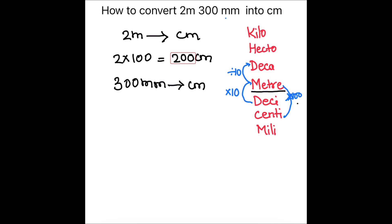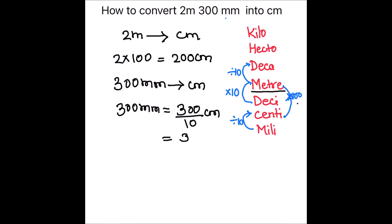Now we convert 300 millimeters to centimeters. To go from millimeters to centimeters, we are going up, so we divide by 10. So 300 millimeters divided by 10 equals 30 centimeters.